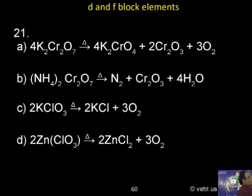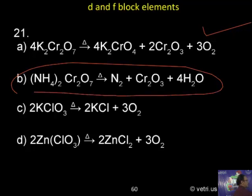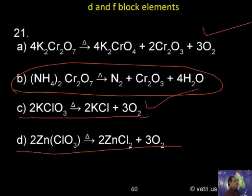Potassium dichromate, action of heat, produces oxygen. Ammonium dichromate is not producing oxygen. Can you follow? So potassium chlorate, laboratory method of preparation. Zinc chlorate, again producing oxygen.